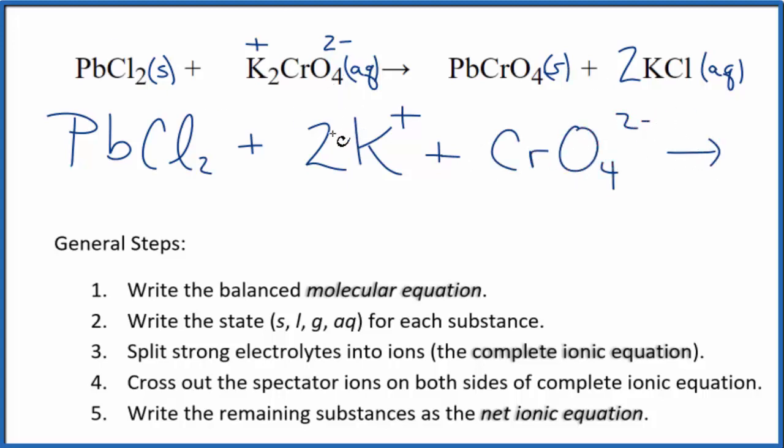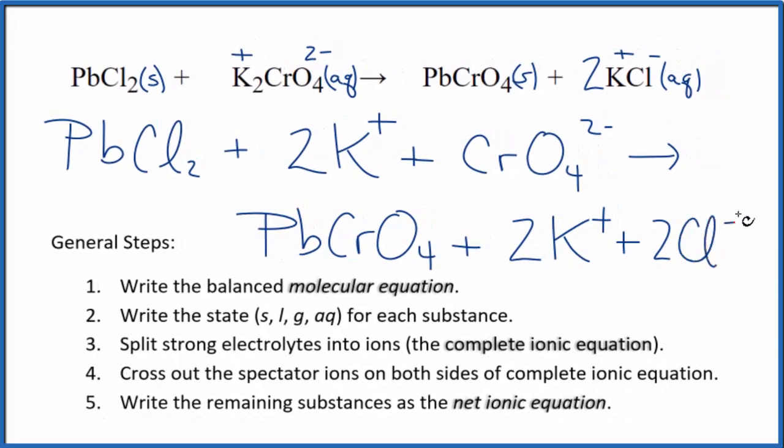And these are the reactants in our net ionic equation. For the products, again, we're not going to split solids apart, so we have PbCrO4. And then we'll have the potassium and the chloride ion. So two potassium ions, and the two goes to everything, so plus two of those chloride ions. This is the complete ionic equation.